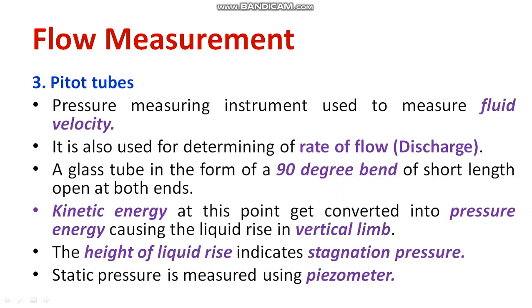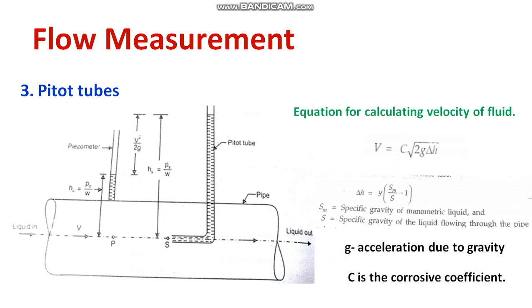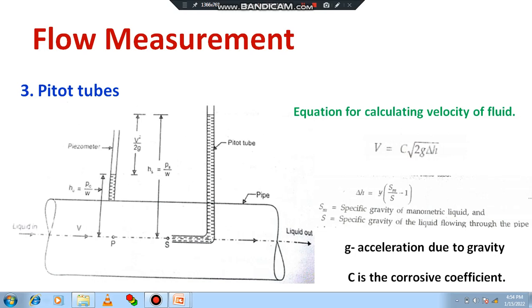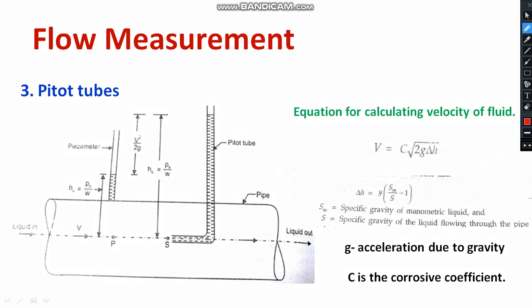The kinetic energy at this point is converted into pressure energy in the vertical limb, and the height of liquid rise indicates stagnation pressure. Static pressure can be measured using a piece of mix — that is secondary. So, kinetic energy is converted into pressure energy — that is exactly what happens in a pitot tube. Is there a formula to calculate velocity? Yes, of course.